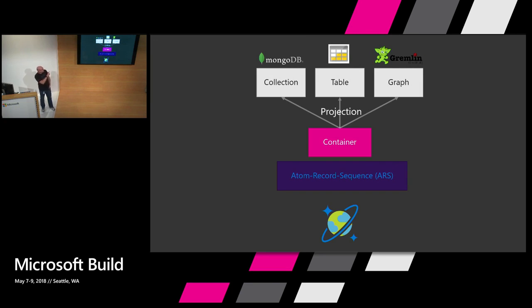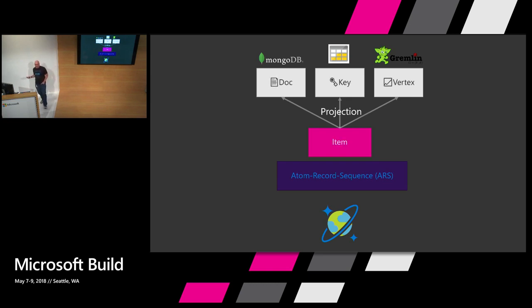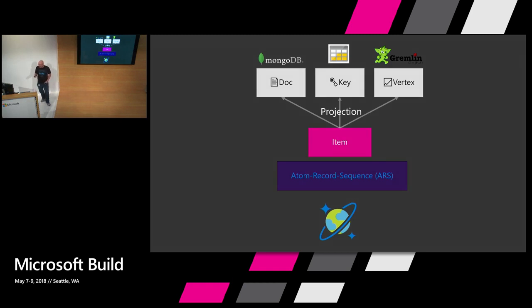So a MongoDB collection, a Table Storage table, a Gremlin graph — and the same thing applies at the item level. You get a document, a key-value pair, or a vertex/edge if you're dealing with a graph.